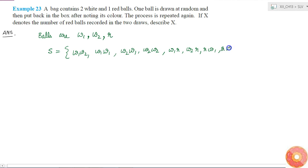Also r w2, and r r. So these are the nine possible cases, right? One, two, three, four, five, six, seven, eight, nine. These are the nine possible cases in the sample space.